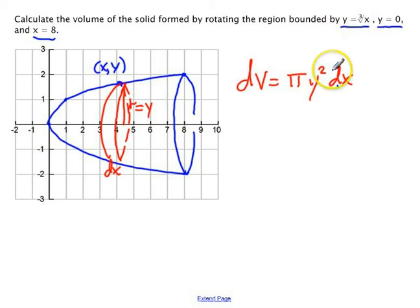Well, y to the first is the cube root of x. So y squared is going to be x to the 2 thirds. That's the volume of one disk.